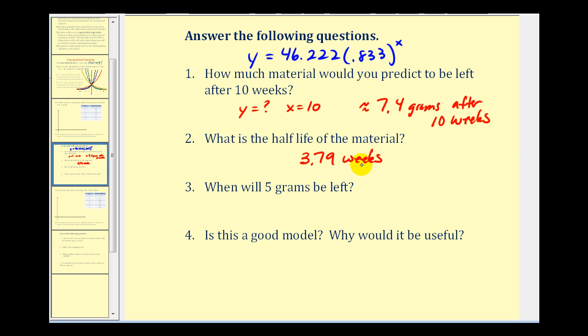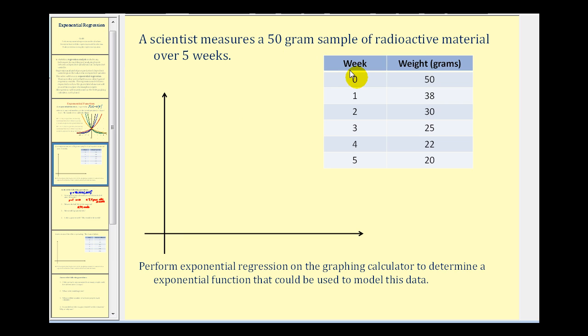Let's go back and look at our data one more time. According to the data, notice that 50 grams is reduced to 25 grams after three weeks. So according to the model, it was approximately 3.8, even though the actual data suggests it would be exactly three weeks. Again, we have a margin of error.